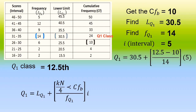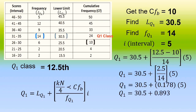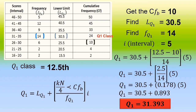Applying all values in our formula: Q sub 1 equals 30.5 plus the quantity 12.5 minus 10, all over 14, times 5. Simplifying, that equals 30.5 plus 0.178 times 5, and the result is equal to 31.393. The approximate value of the first quartile, Q sub 1, is equal to 31.393.